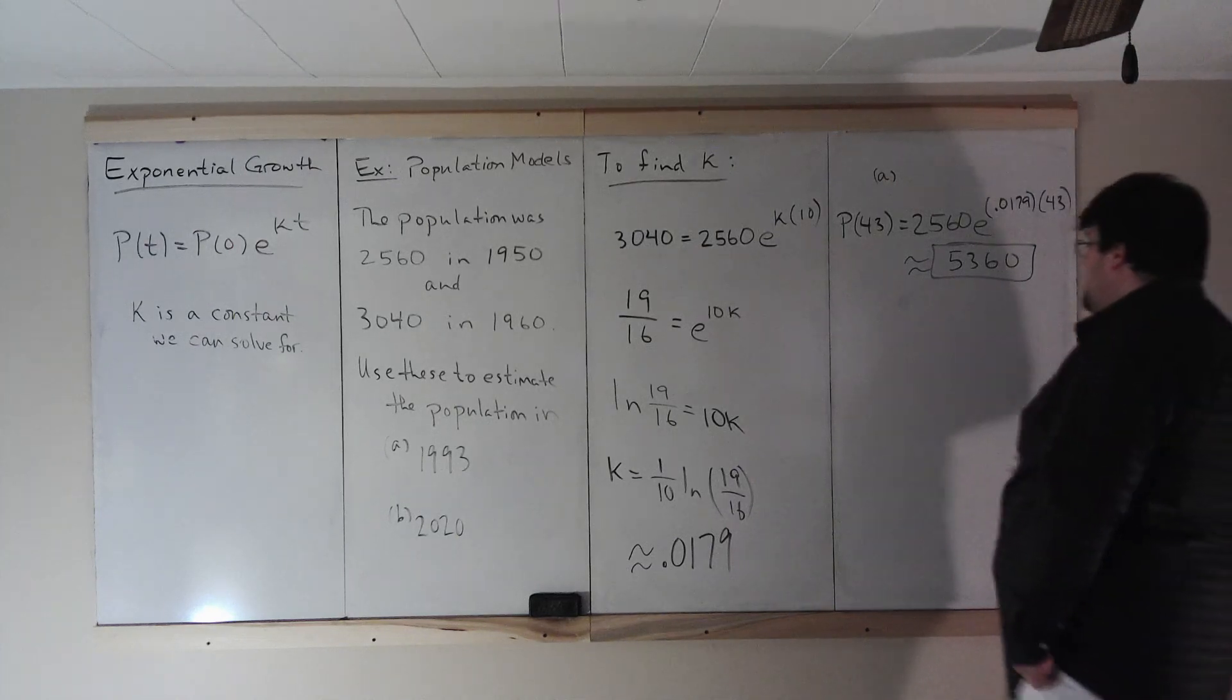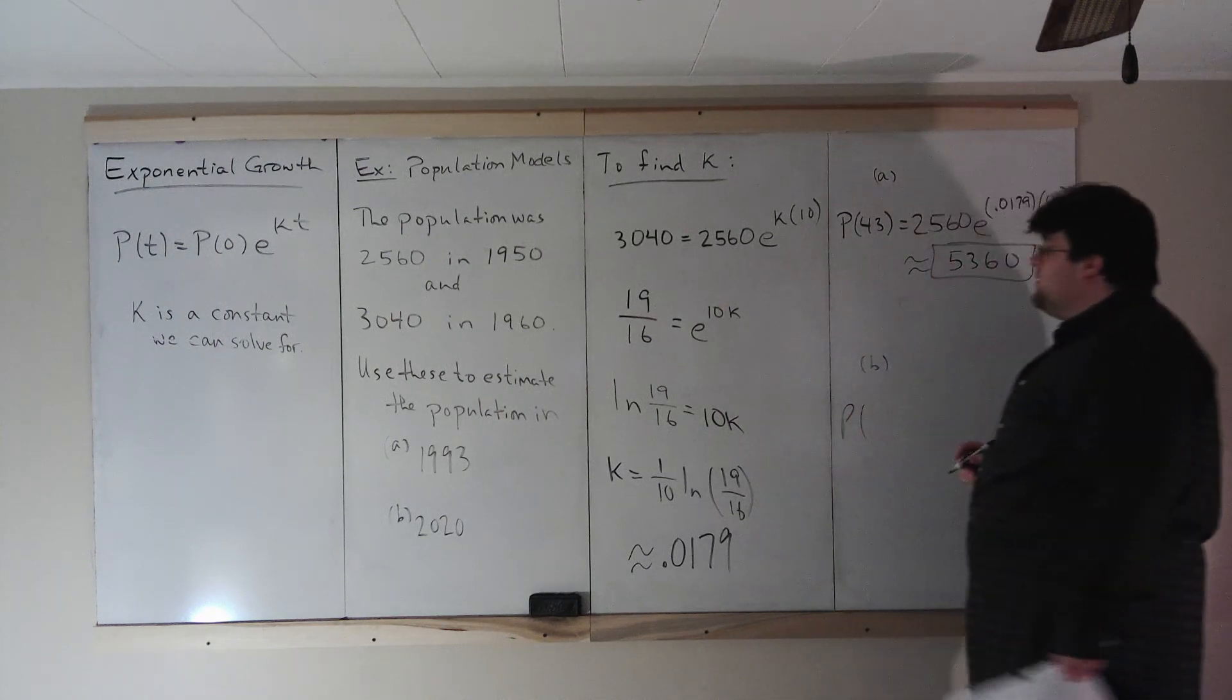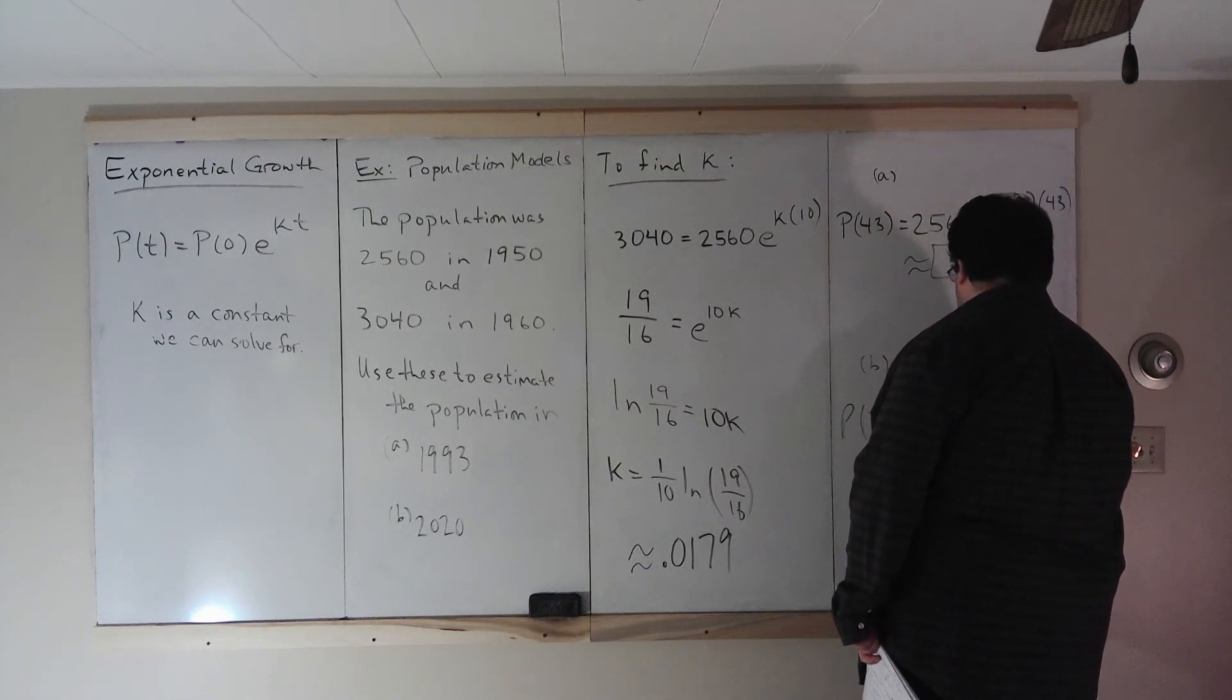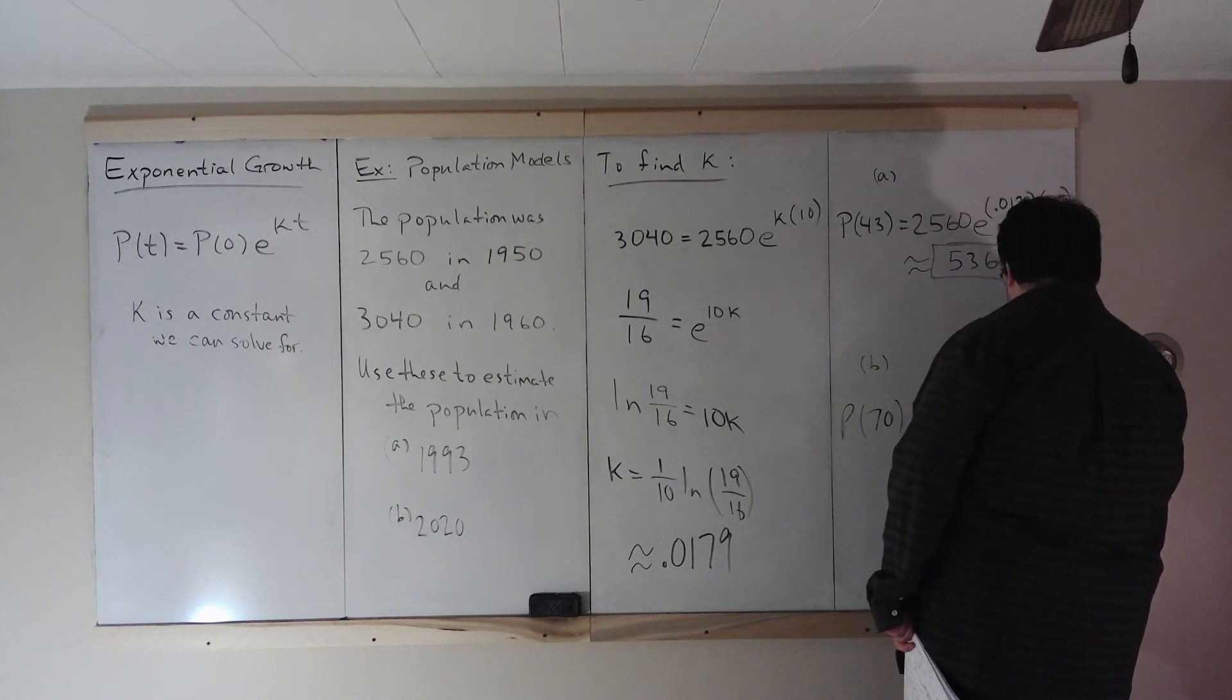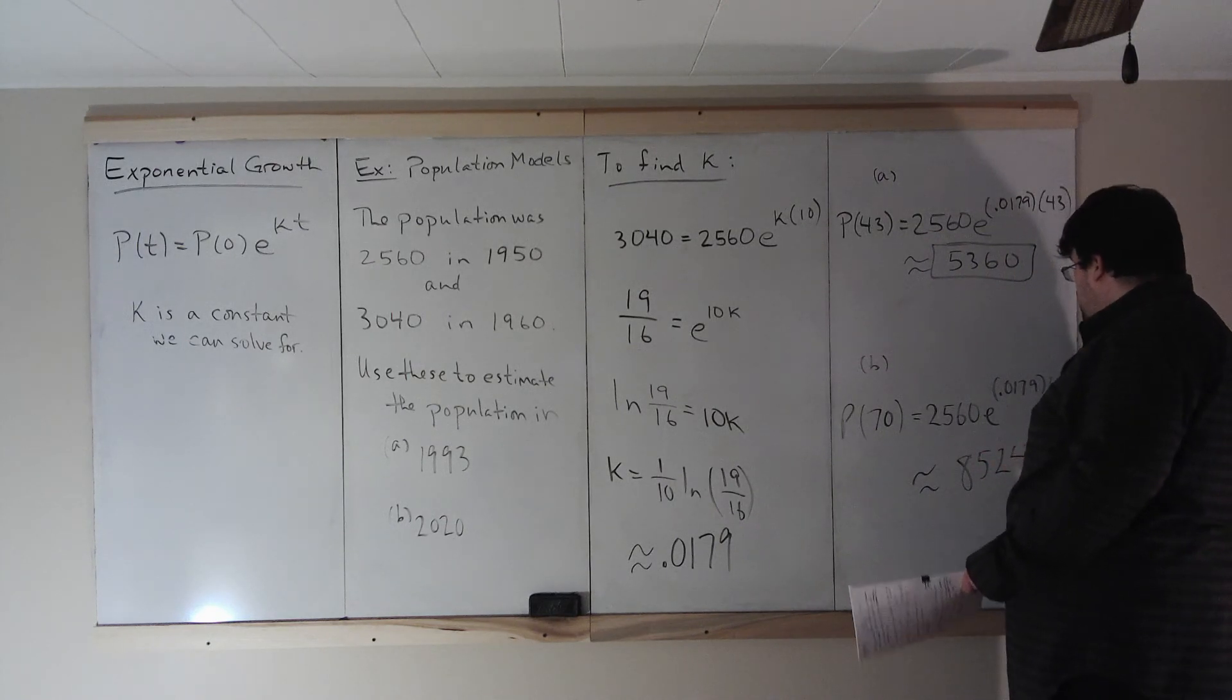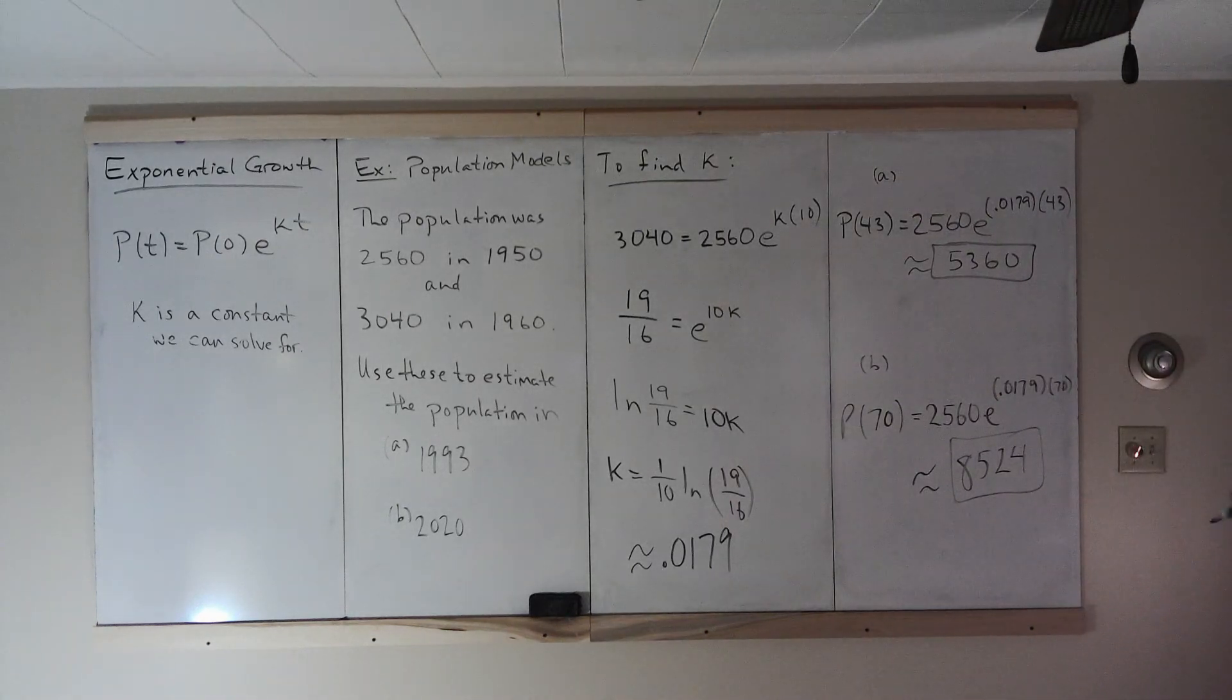And what about 2020? Well, the only difference is that we're looking at 2020 now. So P of, not P of 2020, our base is 1950. 2020 is 70 years later. So P(70) is 2560 e to the k, 0.0179 times our time, which is 70. And this is approximately 8524. So here, we looked at an example of exponential growth. A population will grow at a rate proportional to its size, and it can be modeled by that equation.